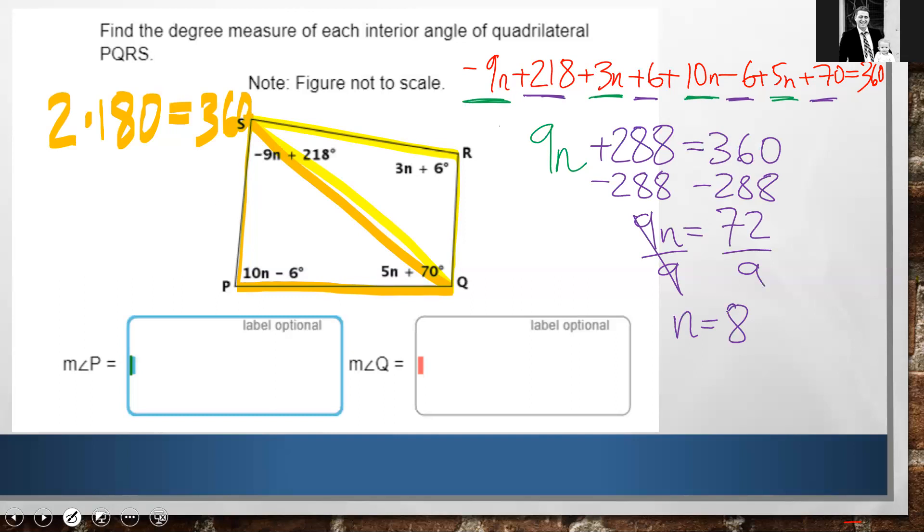Now, how will I solve for the measure of angle P and the measure of angle Q? I'm just going to plug those things in. So I see Q over here is 5n plus 70. So that means I have 5 times 8 plus 70 which will give me 110. And Q, oops, sorry, that was Q. My bad. Say I was solving for Q here. So P is equal to 10n minus 6 where n, of course, is 8. So that's going to give us 80 minus 6 which is 74.